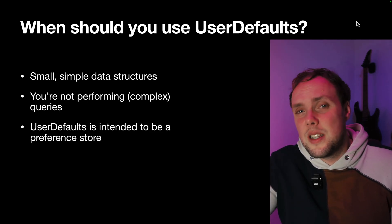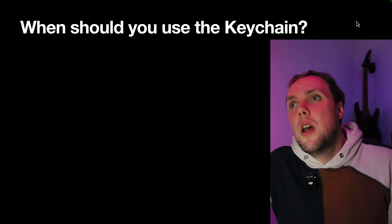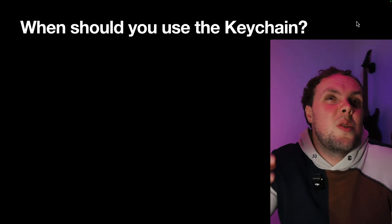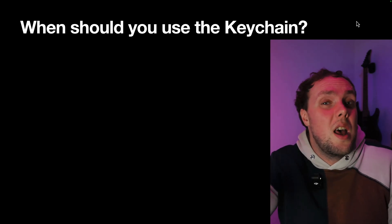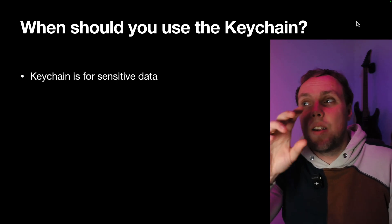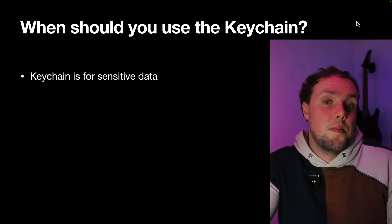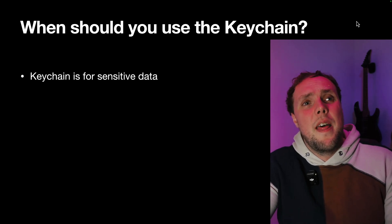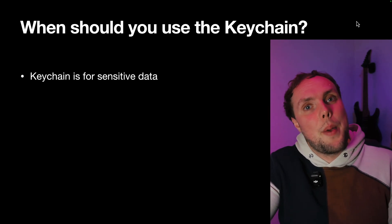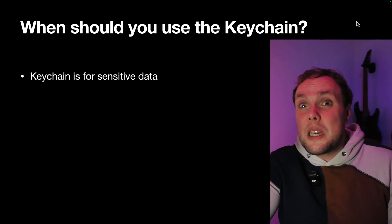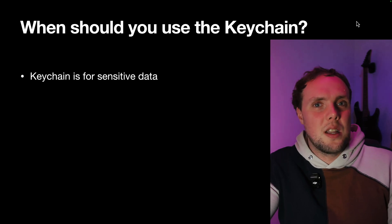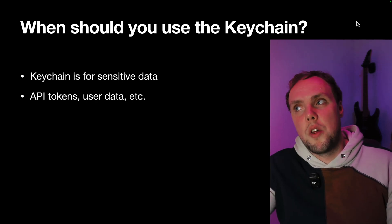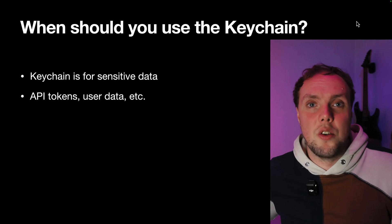The keychain is in many ways quite similar to User Defaults — you typically use it as a key-value store for lightweight pieces of data, and you don't use it as your entire database. The key difference is that the keychain is intended for sensitive data. This could be personally identifiable information like email addresses, a user's API token, or even a password. You should always ask yourself: should I be persisting this in the first place? And if the answer is a convincing yes, then the keychain is where you should put it, because it's encrypted. It has an extra layer of security compared to User Defaults.